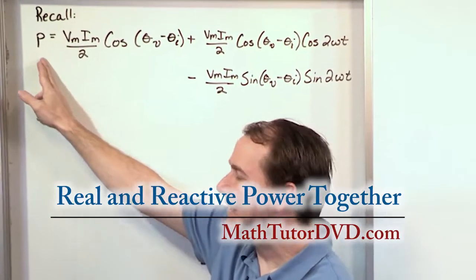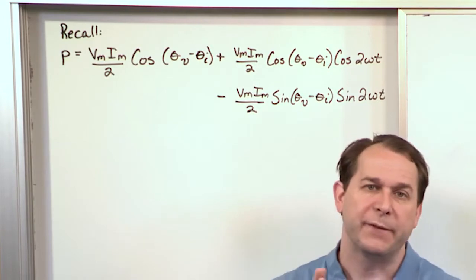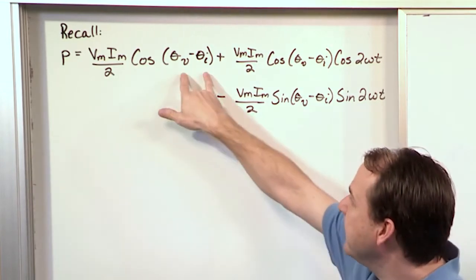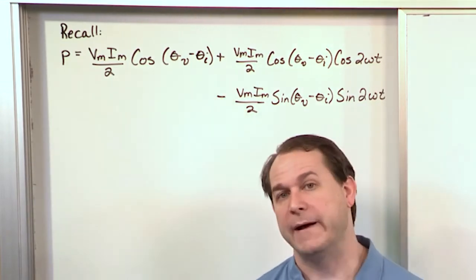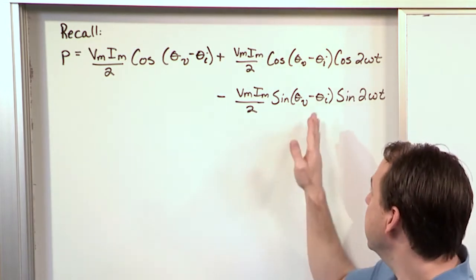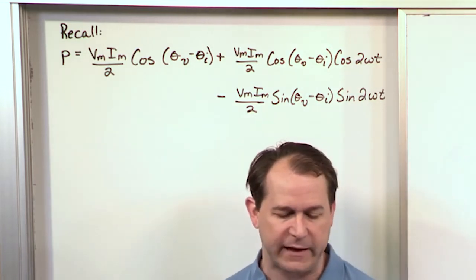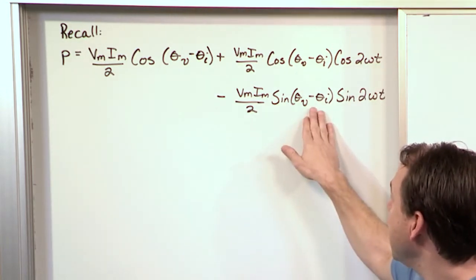This is the instantaneous power we've been talking about. We've discussed the resistive case when the phase angle θ_v minus θ_i is zero, the inductive case where θ_v minus θ_i is plus 90 degrees, and the capacitive case where θ_v minus θ_i is negative 90 degrees.